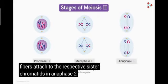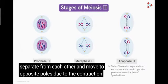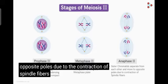In anaphase II, the chromatids separate from each other and move to opposite poles due to the contraction of spindle fibres.